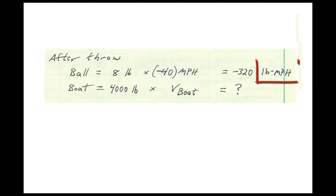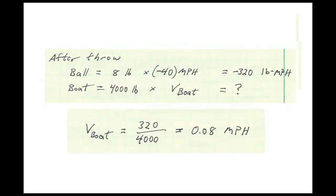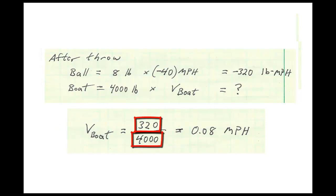Note that the pounds-mass miles per hour uses a hyphen, not a minus sign between them. The ball has minus 320 pounds-mass miles per hour of momentum, and minus 320 plus what equals zero? That what has to be 320 — so that's the boat's momentum. We can use this to get the boat's velocity: take the momentum of 320 and divide by the boat's mass of 4,000, and we get a velocity of 0.08 miles per hour.